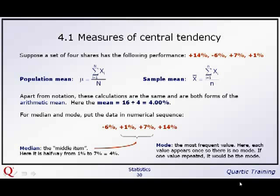Let's begin with an example. A set of four shares has the following performance. Four different shares have performed as plus 14.